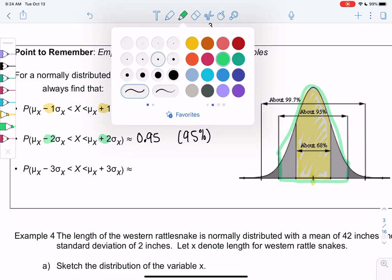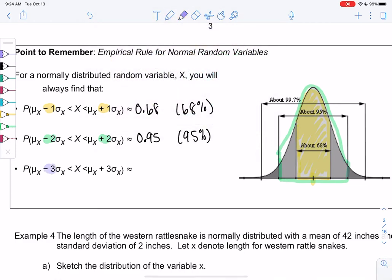And then the final one, we'll do 3, right? So we can add and subtract 3 standard deviations, which means we go 3 in each direction. And we may or may not remember, but that was 0.997, about 99.7%.